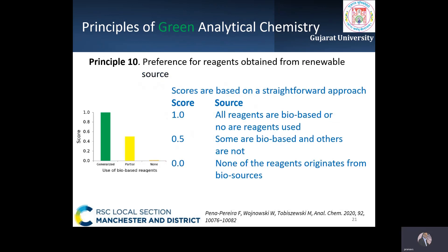In the tenth principle, the use of chemicals derived from renewable sources is a promising and desirable approach, not only in analytical chemistry but in all branches of chemistry. The scores follow a straightforward approach: if all reagents used are bio-based or no reagents are used, a score of 1 is given; 0 when none of the reagents is from renewable resources.